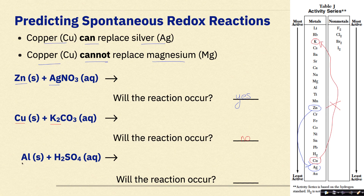Here's our next example: Can aluminum replace hydrogen in sulfuric acid? You might be thinking hydrogen is a non-metal — that is true — but remember, hydrogen is part of our activity series for metals. Here's aluminum, and here's hydrogen. Since aluminum is above hydrogen on this activity series, yes, this reaction will happen, and we can go on and predict our products.